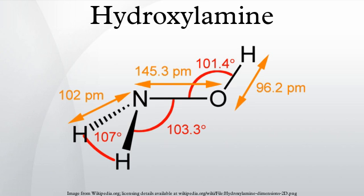Hydroxylammonium salts can be converted to hydroxylamine by neutralization. Julius Tafel discovered that hydroxylamine hydrochloride or sulfate salts can be produced by electrolytic reduction of nitric acid with HCl or H2SO4 respectively: HNO3 + 3H2 → NH2OH + 2H2O.